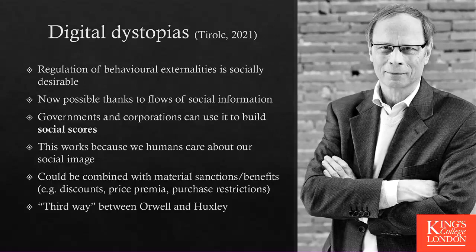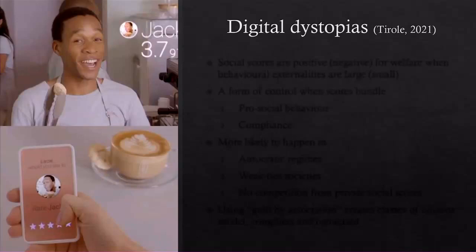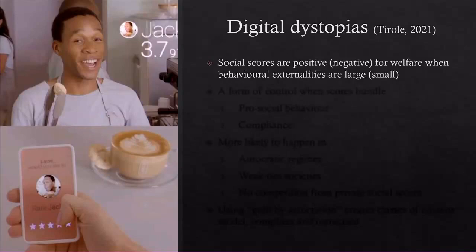You can have a social score that tells you someone has a 200 because they've been great to their neighbors, paid everything, and behaved in a pro-social way. A low score means you're antisocial. This can be paired with benefits and sanctions: discounts if you're well-behaved, price premiums if you're not, or even purchase restrictions — maybe you cannot buy a car or a house without a good enough score. This combination of material and immaterial sanctions, based on the fact that humans care about what others think of us, is very powerful. We already have some social scores — not necessarily talking about China, but even here in the West, a number of followers on Twitter.